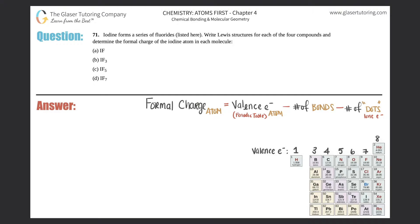Number 71: Iodine forms a series of fluorides which are listed here. Write Lewis structures for each of the four compounds and determine the formal charge of the iodine atom in each molecule. Okay, so we've done tons of questions with Lewis structures already.